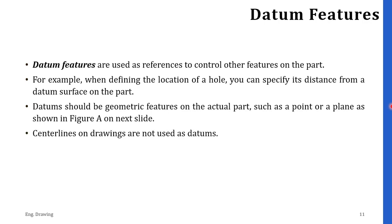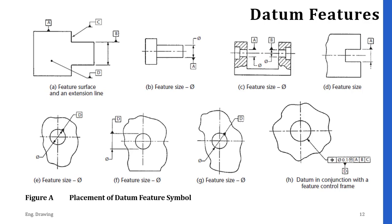Center lines on a drawing are not used as datums. In this figure you can see different types of placement of datum feature symbols. In figure A you can see a feature surface and an extension line. In figure B you can see the feature size, that is the diameter, and how you can show that datum. The same applies for C, D, E, F, G, and H. All of these figures are basically placements of datum feature symbols that you can use in your drawing accordingly.